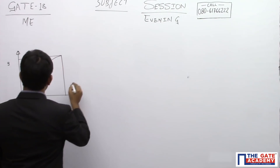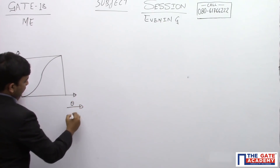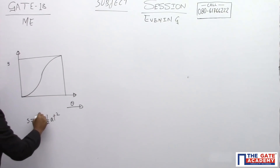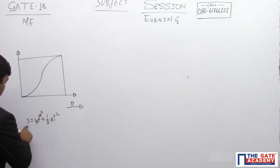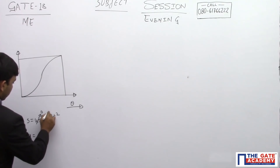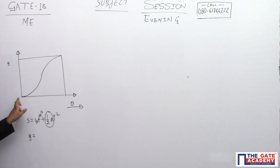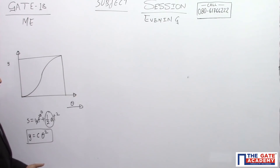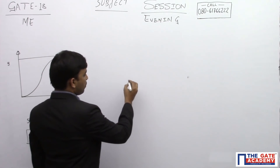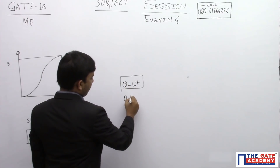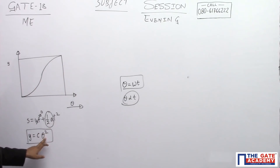I can write the displacement of the follower y as a function of cam rotation. Using s = ut + ½at², and assuming initial velocity is zero, displacement simplifies to y = ½at², which is a constant times t². Since the first half of the raise has uniform acceleration, it is constant times theta squared. Because the cam rotates with uniform velocity, theta is directly proportional to time (theta = omega × t), so I replace the time coordinate with theta, giving displacement proportional to theta squared.